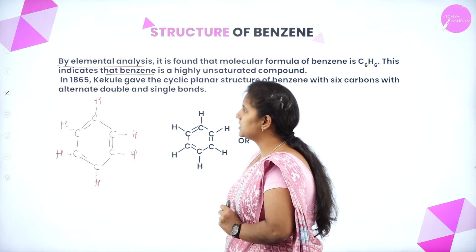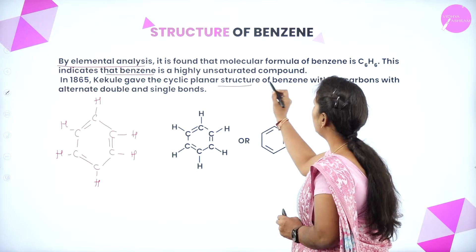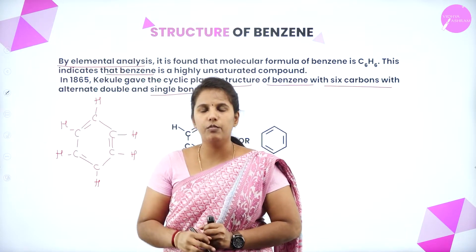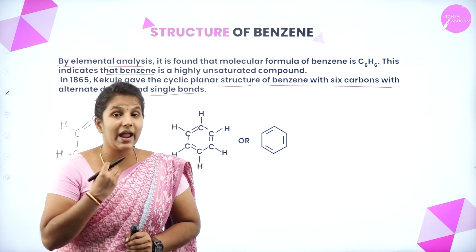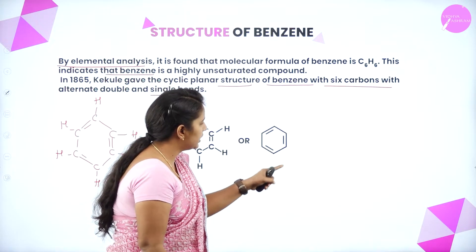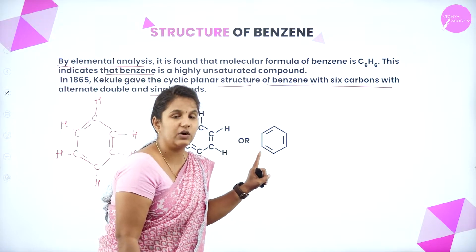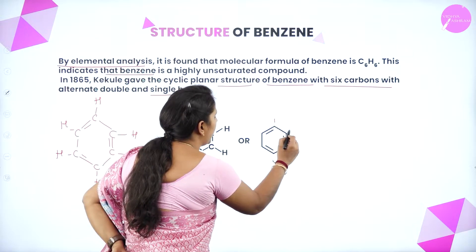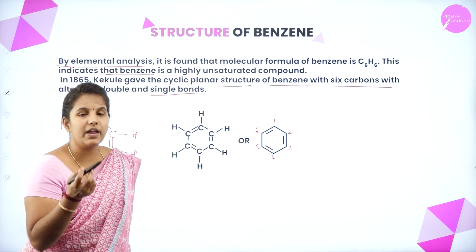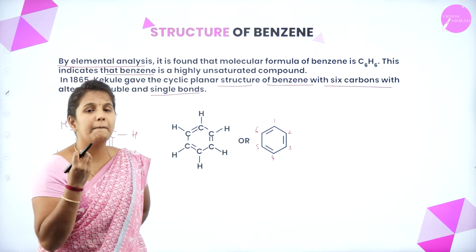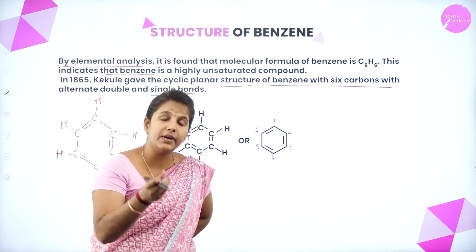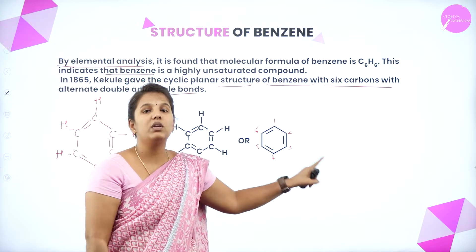In 1865, Kekulé gave the cyclic planar structure of benzene, which has six carbon atoms with alternating double and single bonds. This is the Kekulé structure — a closed chain with six carbon atoms linked by alternating single and double bonds, with one hydrogen atom on each carbon. The valency of carbon is balanced by these alternating single and double bonds, showing a high degree of unsaturation in the benzene ring.